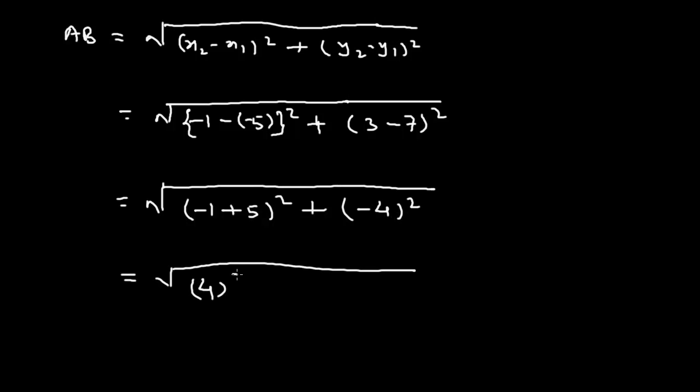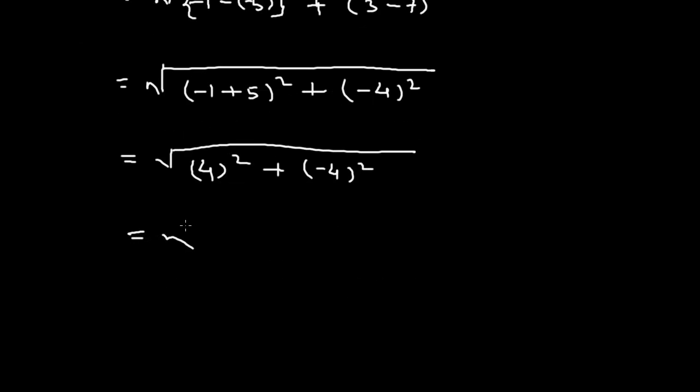This is equals to 4 squared plus (-4) squared. This is equals to 16 plus 16. This is equals to square root of 32, and this is equals to 4 square root of 2. So this is the solution of the second part.